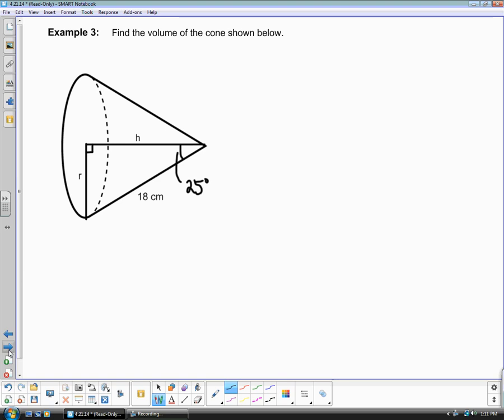Example 3, find the volume of the cone shown below. Now, this time they do not give you the radius and they do not give you the height. But we do know the angle that it is creating up at the top. So if you want to redraw that triangle, you can probably already tell yourself, oh, we're going to have to use trig. You are correct. We have a hypotenuse of 18. So we can't even use Pythagorean theorem here because we only have one of our sides of our right triangle.